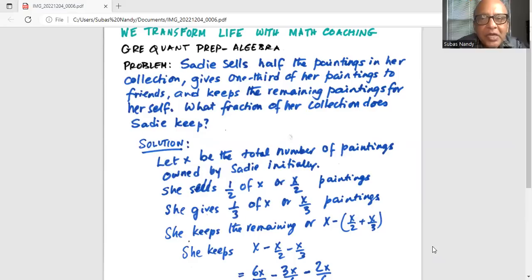Sadie sells half the paintings in her collection, gives one third of her paintings to friends, and keeps the remaining paintings for herself. What fraction of her collection does Sadie keep?